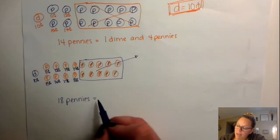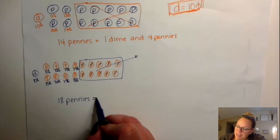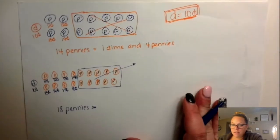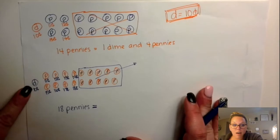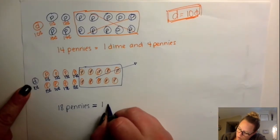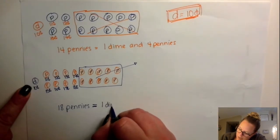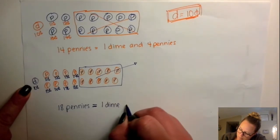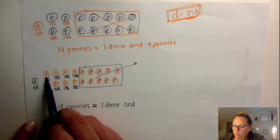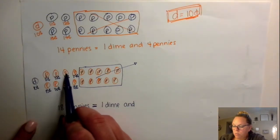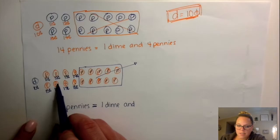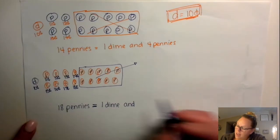So 18 pennies is equal to — it's the same as — how many dimes? One dime. And how many pennies do I have? 1, 2, 3, 4, 5, 6, 7, 8. So 18 pennies equals 1 dime and 8 pennies.